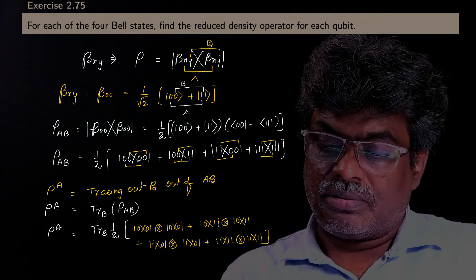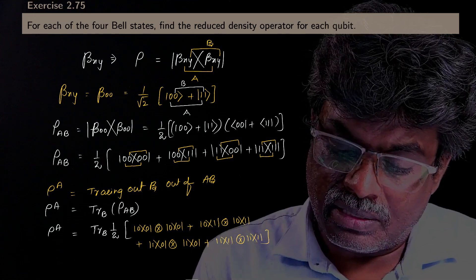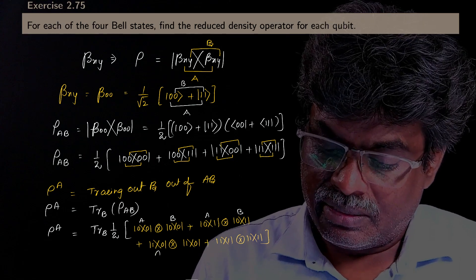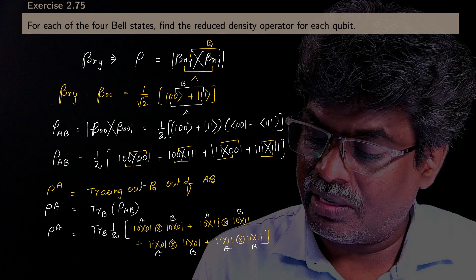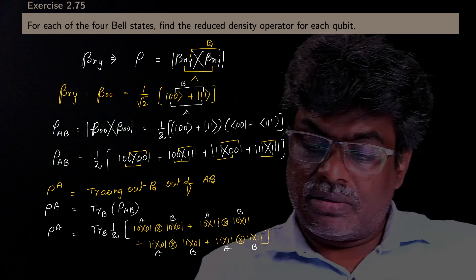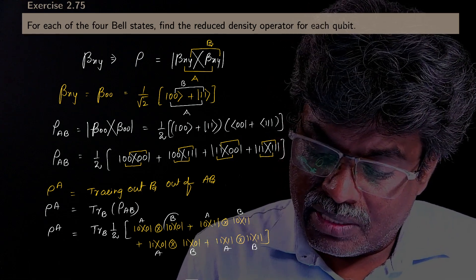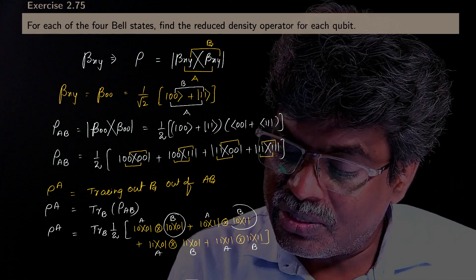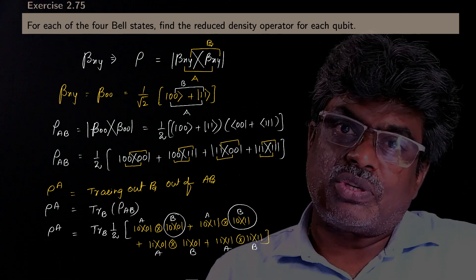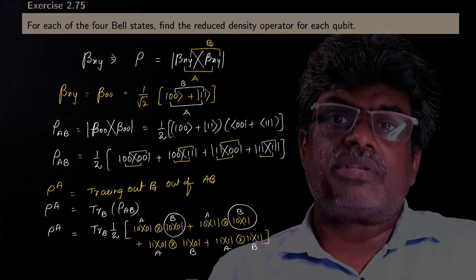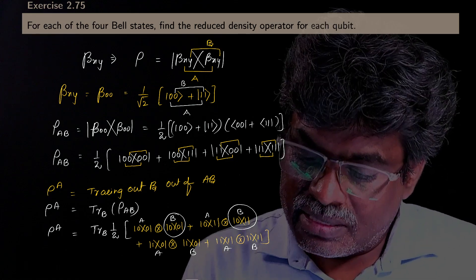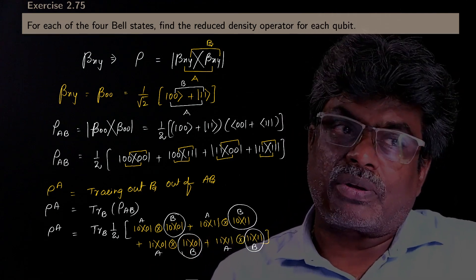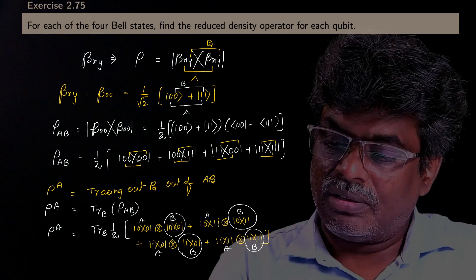Only system A remains — tracing over B. The trace of |0⟩⟨0|_B is the inner product ⟨0|0⟩ = 1. The trace of |0⟩⟨1|_B is the inner product ⟨1|0⟩ = 0 because they are orthogonal states. Similarly, that term also becomes 0, and the trace of |1⟩⟨1|_B equals ⟨1|1⟩ = 1.